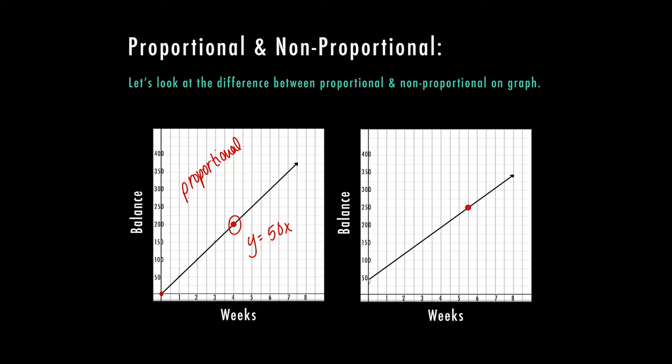If you look here at the right, I know immediately, this one is non-proportional, because it does not go through zero, zero. That is all you have to look for if it's a linear graph, and they want to know proportional or non-proportional. If this does not go through zero, zero, then it is non-proportional. So that's the easiest way to tell on a graph.